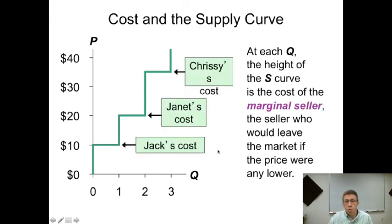So at each quantity, the supply curve gives you the cost to the marginal seller. Right, the marginal seller for one unit is Jack—he's the only person who's selling. He needs at least ten dollars. If it drops below ten, Jack drops out of the market.